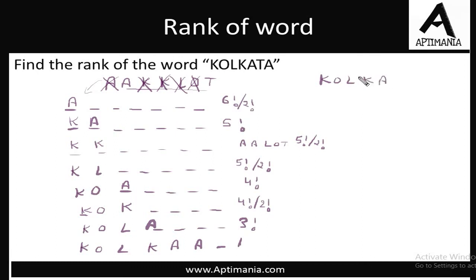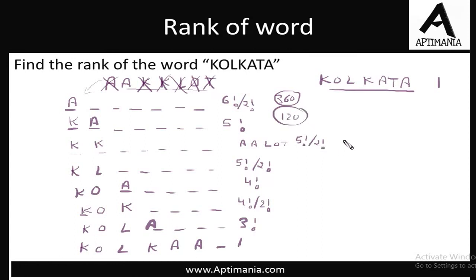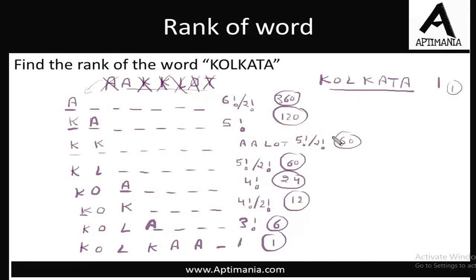After K comes L — L was required at the third position, so we fix it and cancel it. Starting again from A: 3 letters remain and 3 positions — arranged in 3 factorial ways. With K-O-L fixed, next comes K — required in the original word, so we fix it. Then A is also required — fix it. The next first letter remaining is A again: one position left, A was not required — can be filled in 1 way. Then T was required; we fix it. The only position left has A — this makes Kolkata, counting as 1. In total: 360 + 120 + 60 + 60 + 24 + 12 + 6 + 1 + 1 = 644. The rank of Kolkata is 644.